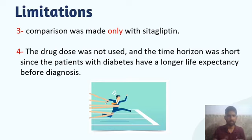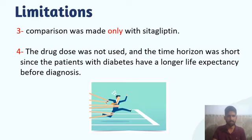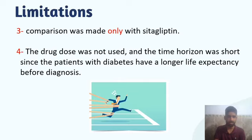Third, the comparison was only made with Sitagliptin, not with the whole pharmacological family of DPP-4 inhibitors, and similarly only Glibenclamide was used rather than the full sulfonylurea class. Fourth, drug dose was not accounted for, and the time horizon was short since patients with diabetes have a longer life expectancy before diagnosis — the average life expectancy of 4.23 years used in this study is very short.